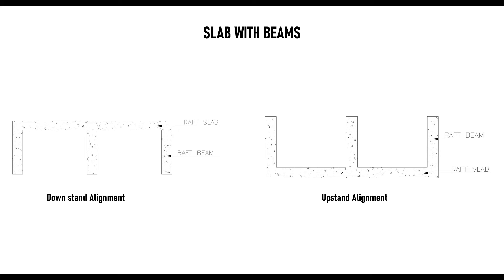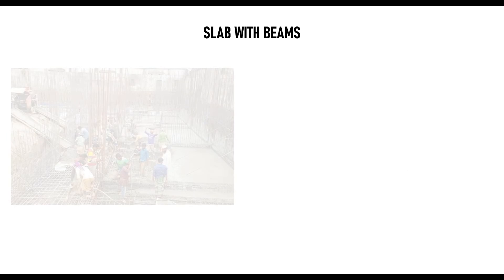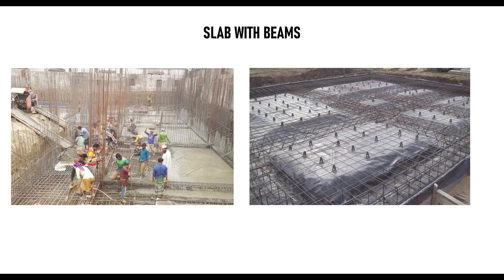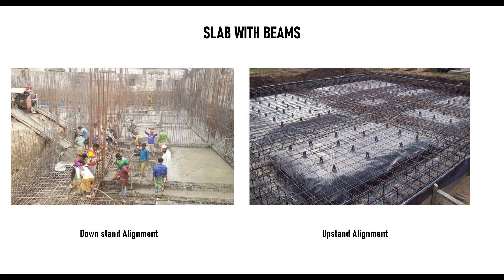Here is a typical example of both orientations. On the left-hand side, you can see the downstand alignment, where the beam projects downward from the slab. On the right-hand side, the top of the beam and the slab are in alignment — that is the upstand alignment of a beam-slab raft foundation.